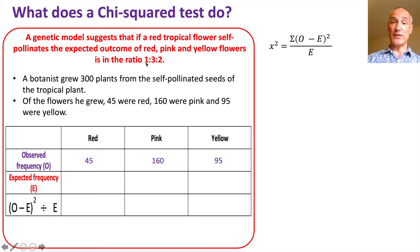So 1 in 6 of them should be red. So we've got 300 times 1 in 6, we should have 50 red. For the pink we've got 3 out of 6, that's a half. So we should have 300 times 3 over 6 is 150. And finally, for yellow it's 2 out of 6 which is a third. So that's going to be 100. So that's our expected frequency.